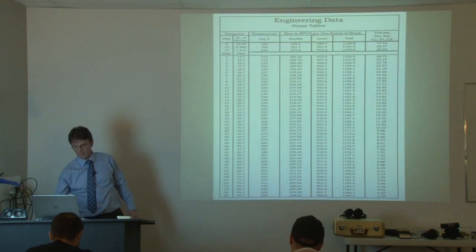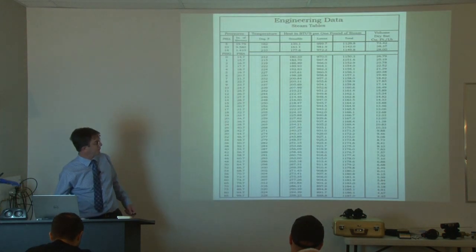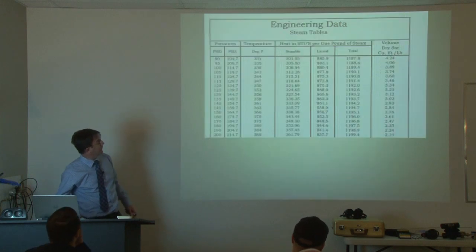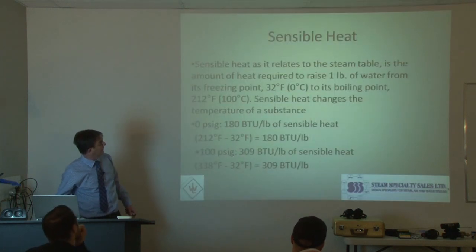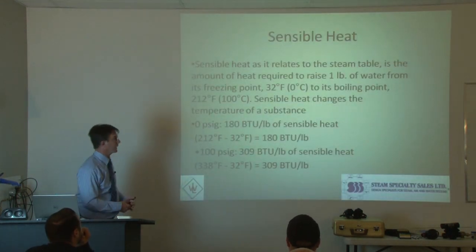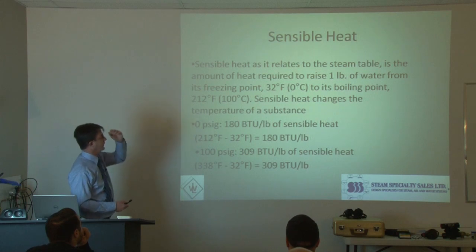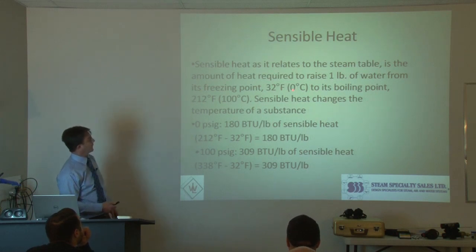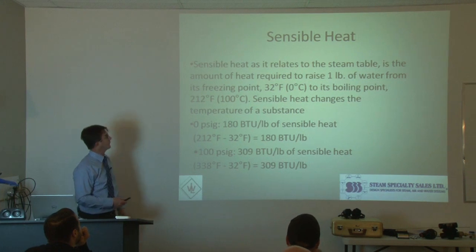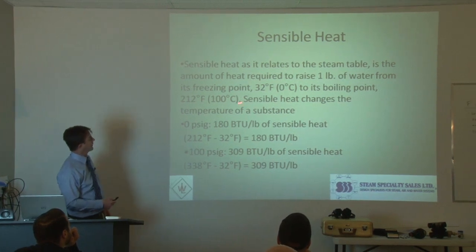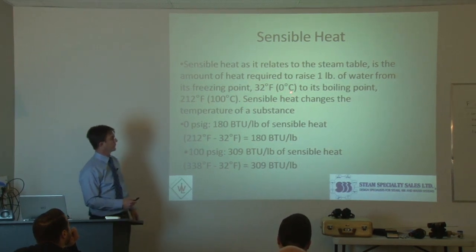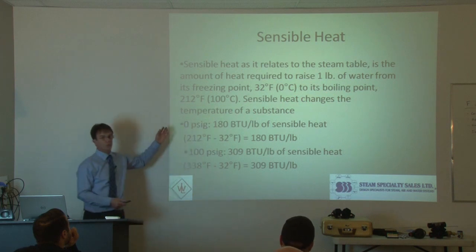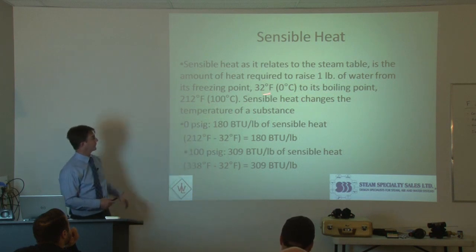So steam is distributed at high pressures and high temperatures. So what does sensible heat mean? Sensible heat, as it relates to the steam table, is the amount of heat required to raise one pound of water from its freezing point, 32 degrees Fahrenheit or 0 Celsius, to its boiling point, which is 212 or 100 degrees Celsius.